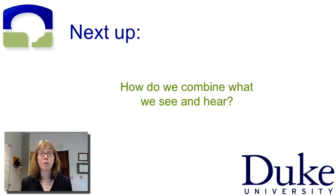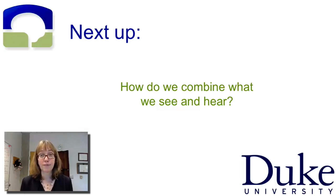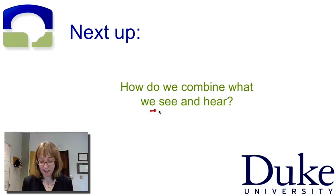Coordinating between vision and touch is one of the problems that the brain faces when trying to combine information across different sensory systems. Another equally important issue is how we combine what we see and what we hear, and that's what I'll talk about in the next video.